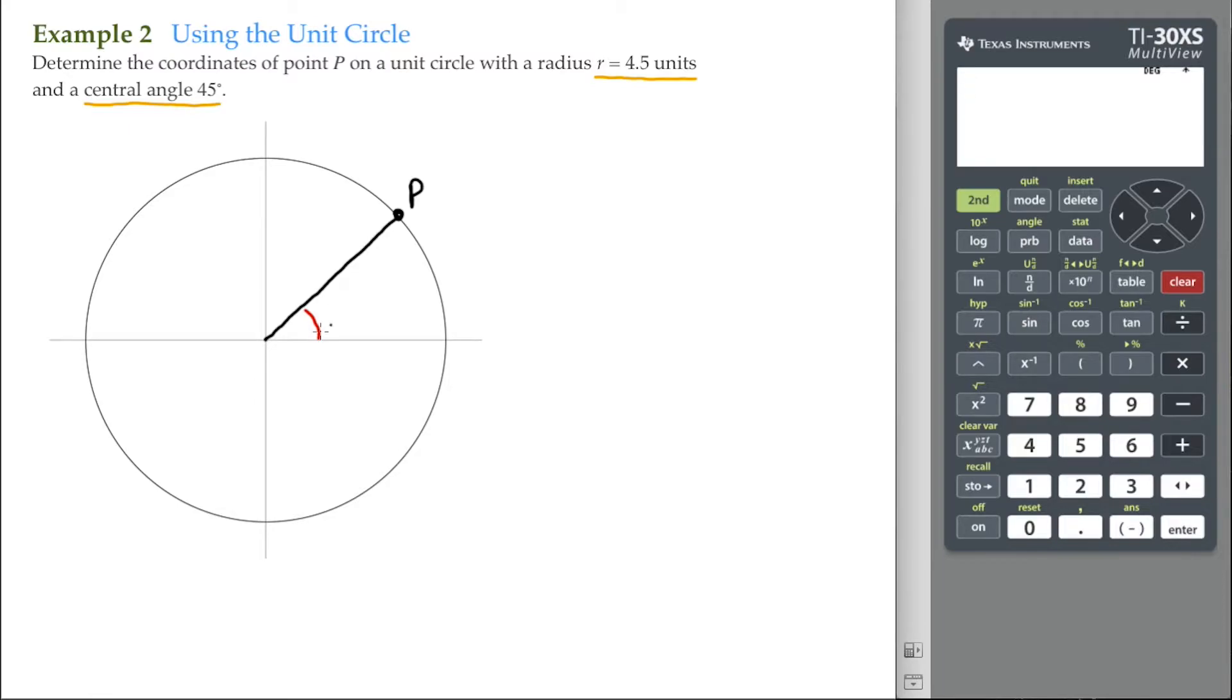So again, we have our special right triangle. I'll go ahead and put it in here. And this is a 45-45-90 special right triangle. We know from our special right triangles that if this is a measure of 1, this is a radius with a measure of 1 unit, then this measure here is going to be the square root of 2 over 2, and this measure here is also going to be the square root of 2 over 2.